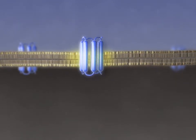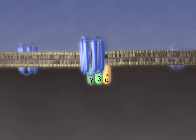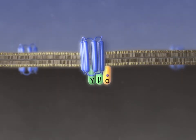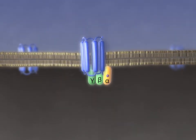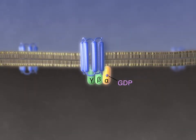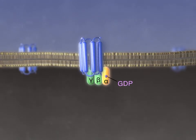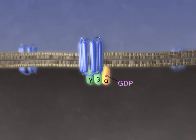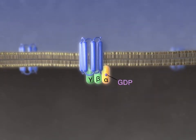Most GPCRs couple to heterotrimeric G-proteins composed of an alpha, beta, and gamma subunit. This G-protein binds to the inner surface of the receptor and is inactive when GDP is bound to the alpha subunit.